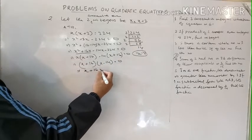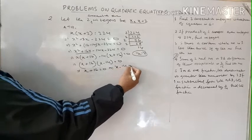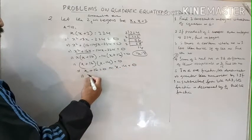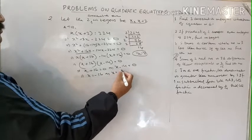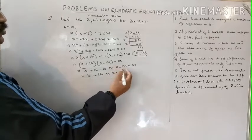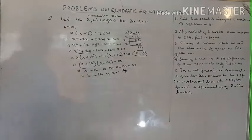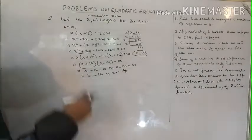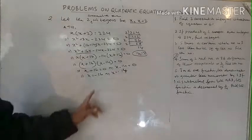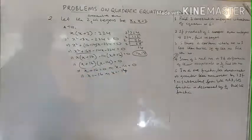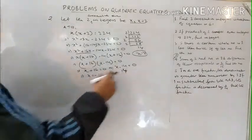Applying the zero product rule: either x plus 16 equals 0 or x minus 14 equals 0, giving x equals minus 16 or x equals 14. Since the question says consecutive even integers — not necessarily positive — we consider both values.